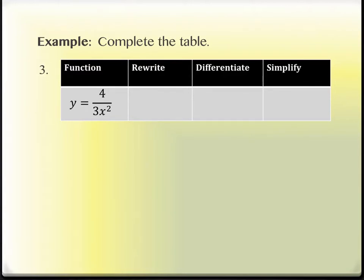In your WebAssign, there will be a table kind of like this, and the same thing will happen in written work as you look at some quiz practice questions. It's trying to get you used to the idea that sometimes a problem doesn't look like one of those rules, but there's a way to rewrite it so that it will. Eventually we won't have a table anymore — you'll just start with something like four over three x squared and be expected to fill in the missing pieces.